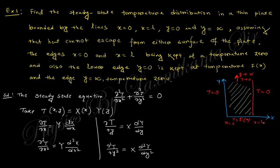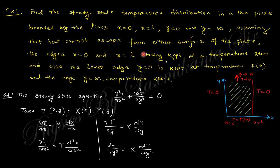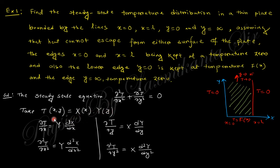This is x equals to L. From x equals 0 to x equals L, there is a plate, and y is infinite — up to infinity. At the line y equals 0, the temperature is a function of x. This is the total condition. Now you need to find the temperature distribution.